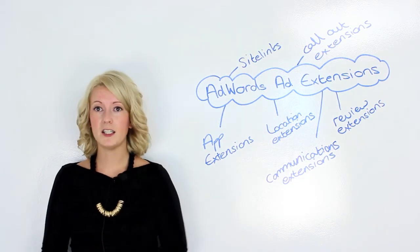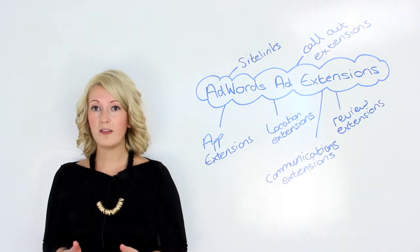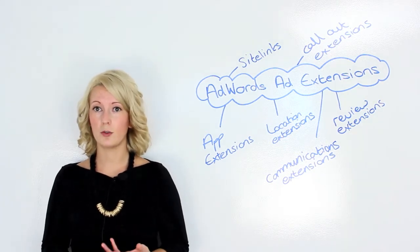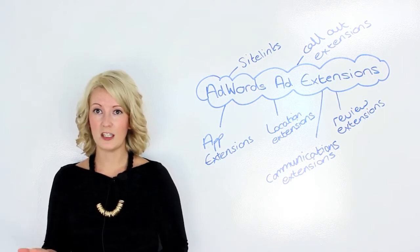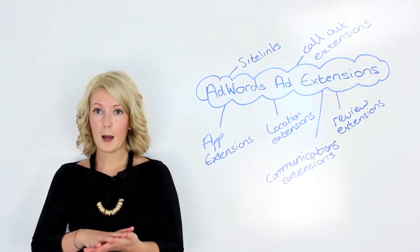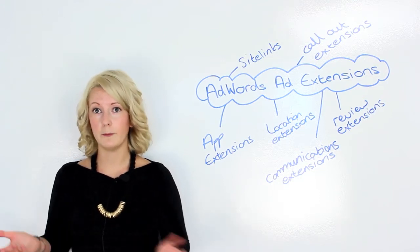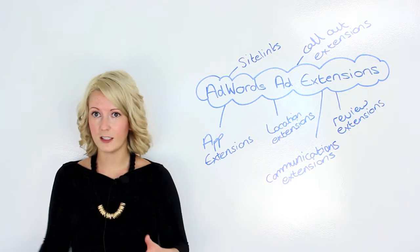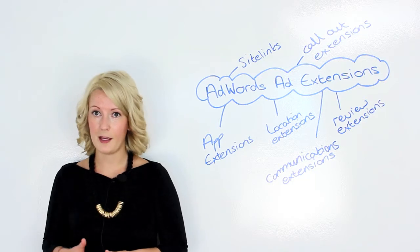Location extensions are ideal for the travel industry if you've got lots of local branches or even just one particular local branch that you want to push footfall into. So you could set up a location extension for your branches, be it all in the same campaign or in separate campaigns depending on whether you're bidding on terms like travel agent Southampton, for example, in which case you'd only want to have the Southampton location extension on that campaign.